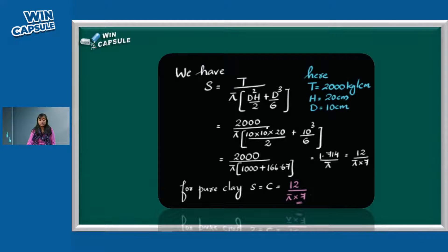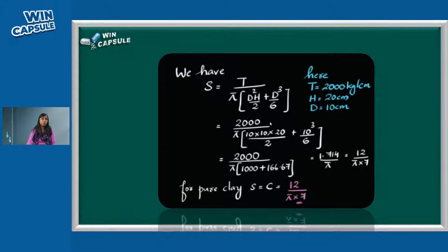Now substituting the values: 2000 divided by 1166.67, which simplifies to approximately 1.714. This fraction equals 12 by 7π. So the shear strength is 12/7π. The clay cohesion — since the clay is purely cohesive — is approximately equal to 0.27 kg/cm².